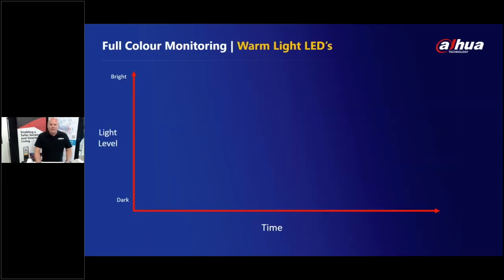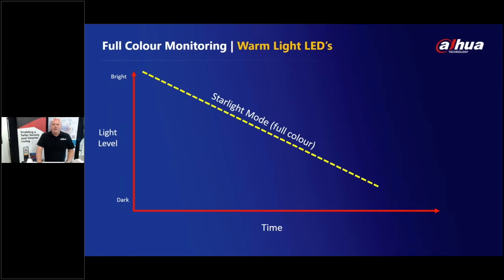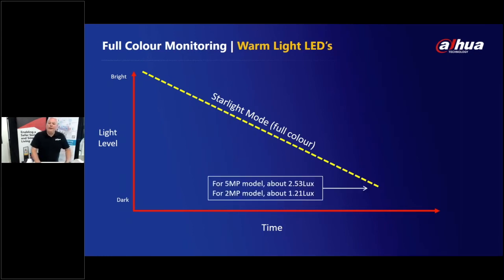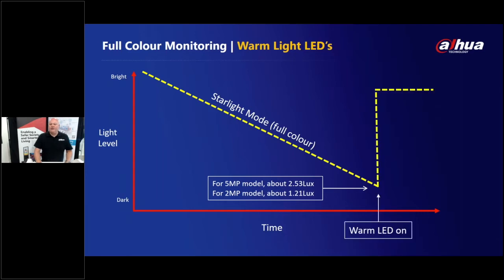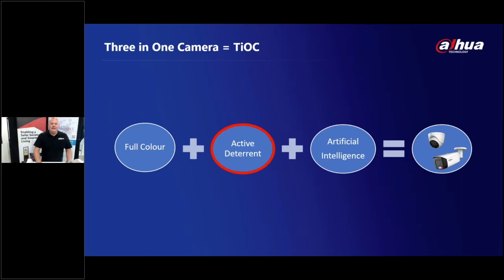When do the warm LEDs switch on? As the light level reduces over time, the warm LEDs activate at 1.21 lux for the two megapixel version and 2.53 lux for the five megapixel version. They click in precisely when the image is becoming unusable for evidential purposes, giving you very good quality images.